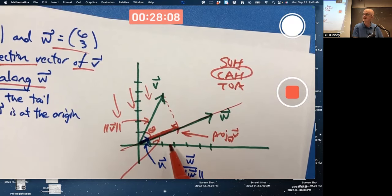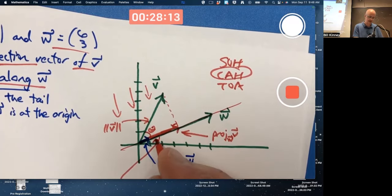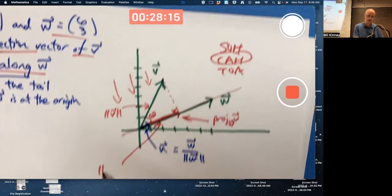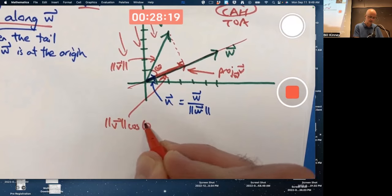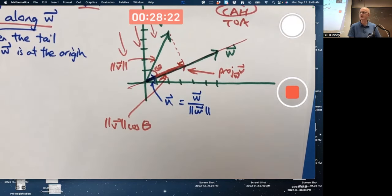Cosine of this angle is adjacent over hypotenuse. Therefore, the adjacent is the hypotenuse times the cosine of the angle. This side has a length of the magnitude of V times the cosine of that angle. Right? This is right triangle trigonometry problem solving. You've done this many times.